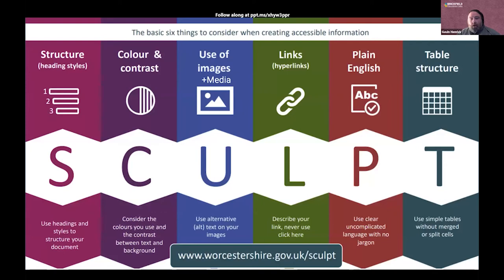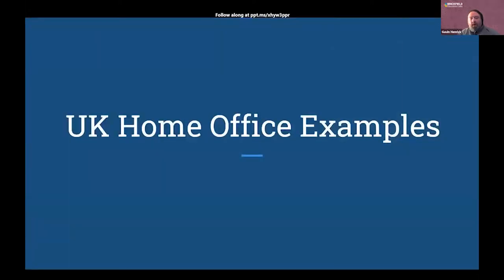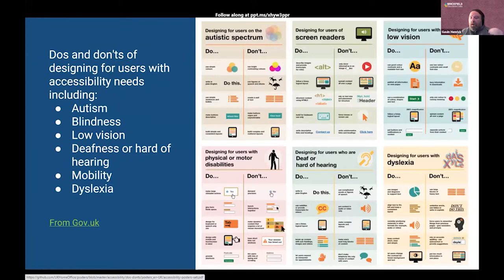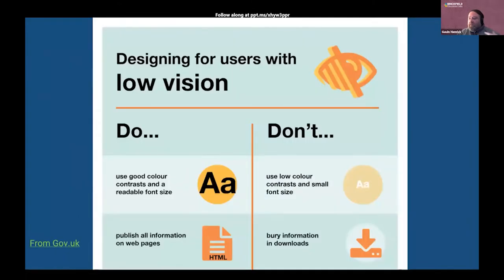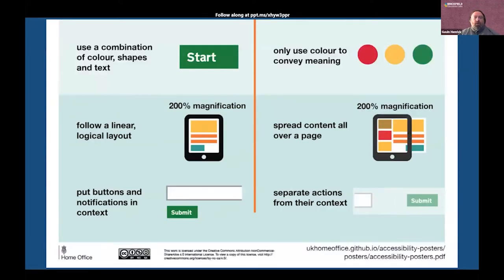One really good scaffolding approach is taken by Scopes, done by Worcestershire County Council. It provides very simple, basic accessibility things which apply to everything — to email just as much as web content. On top of that, you might use what the UK Home Office does: a set of posters around the do's and don'ts for designing for users with specific accessibility needs — autism, blindness, no vision, and so on. These go through very clear do's and don'ts, building up that solid foundation.